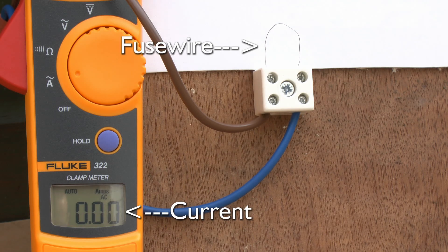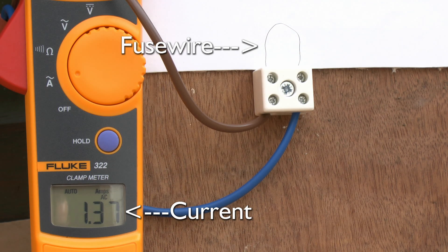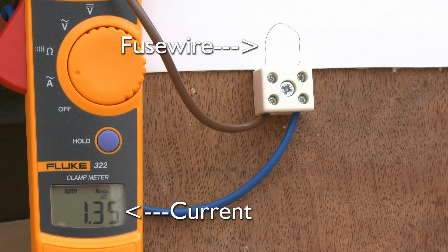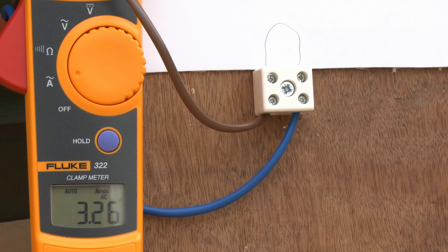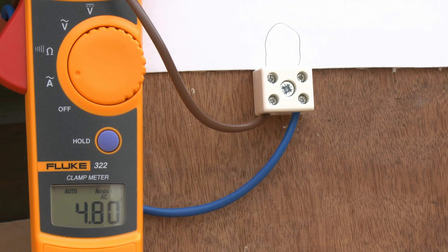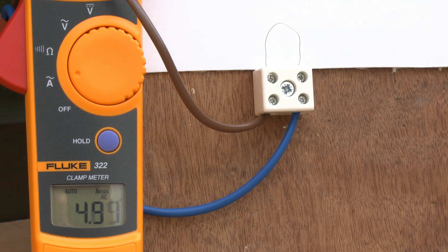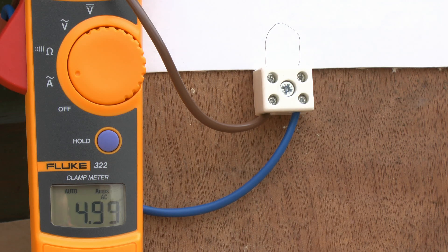Now this is 5 amp fuse wire, so let's just turn on. We've got the starting current there about 1.3 amps, so just increase that. That's the full 5 amps there. As you see, the fuse wire is doing absolutely nothing.